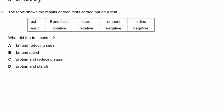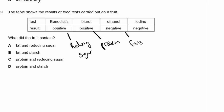Question 9: The table shows results of food tests on a fruit. Benedict's test is for reducing sugars like glucose — positive. Biuret is a test for protein. Ethanol is a test for fats or lipids. Iodine is a test for starch. If Benedict's and Biuret are both positive, the fruit contains reducing sugar and protein. That would be option C.